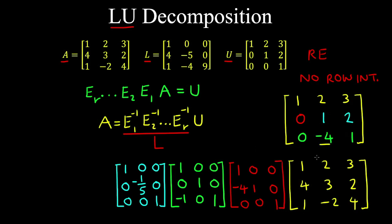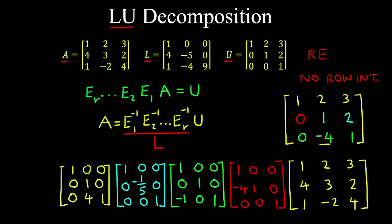Next we want to zero out the remaining entry in row 3 column 2, so we add 4 times row 2 to row 3. That is our next elementary matrix. So 0 times 2 plus 1 times 4 minus 4 times 1; the rest of the identity matrix entries remain the same. 0 times 2 plus 4 times 1 minus 4 times 1 gives 0. And 0 times 3 plus 4 times 2 is 8, plus 1 times 1 gives 9 for this entry.